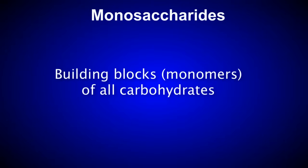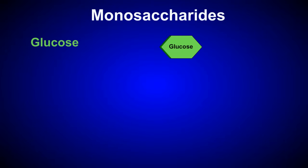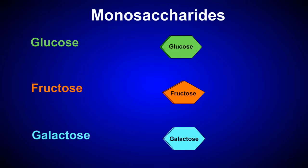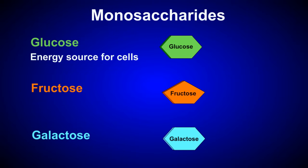Common monosaccharides include glucose, fructose, and galactose. Glucose is by far the most abundant monosaccharide. It's water-soluble, easily transported through an organism, and is the energy source for cellular respiration and the production of ATP.